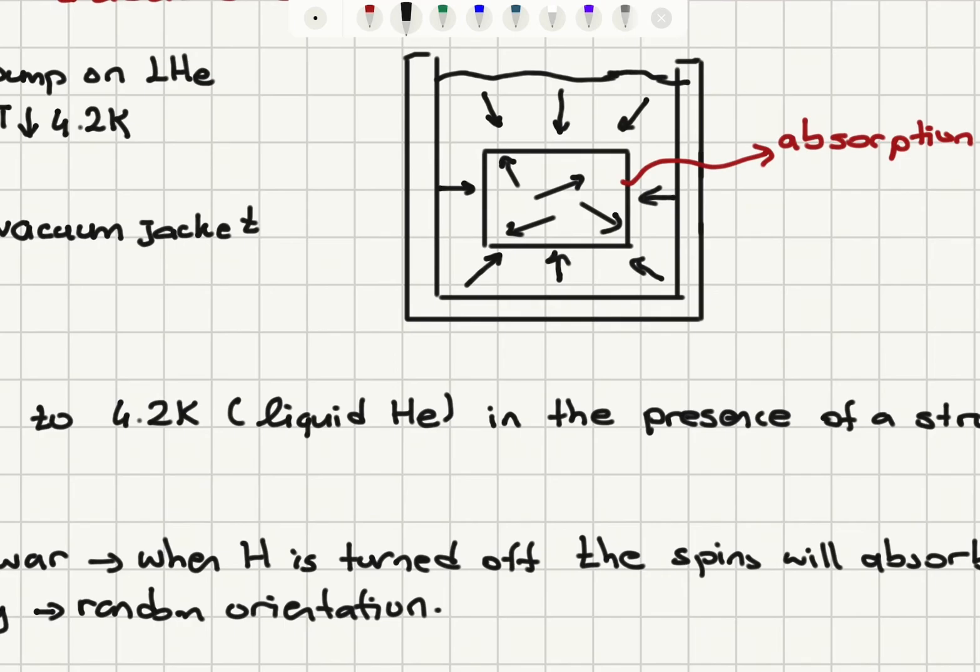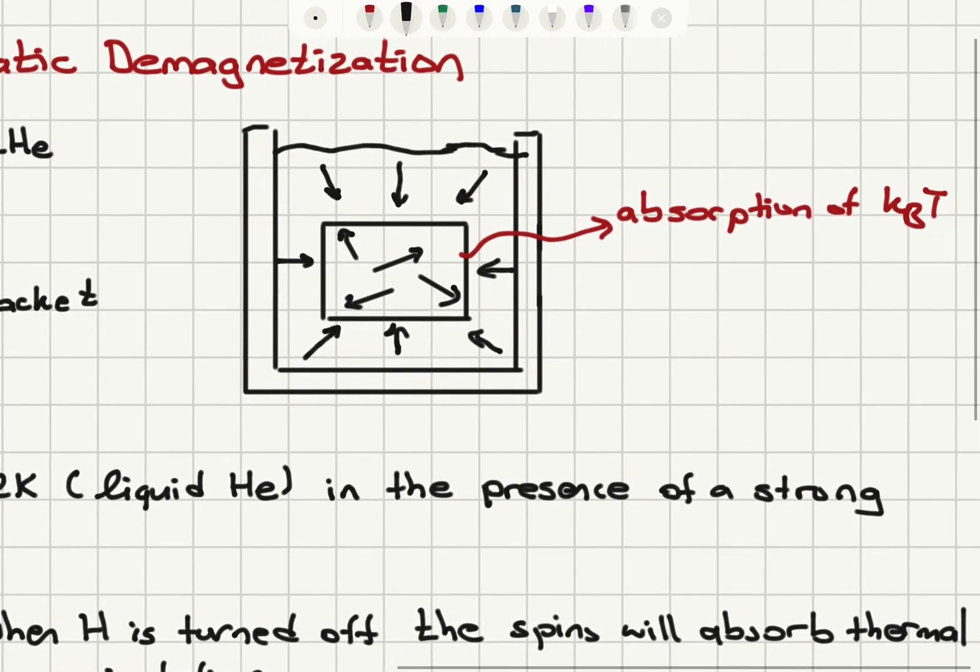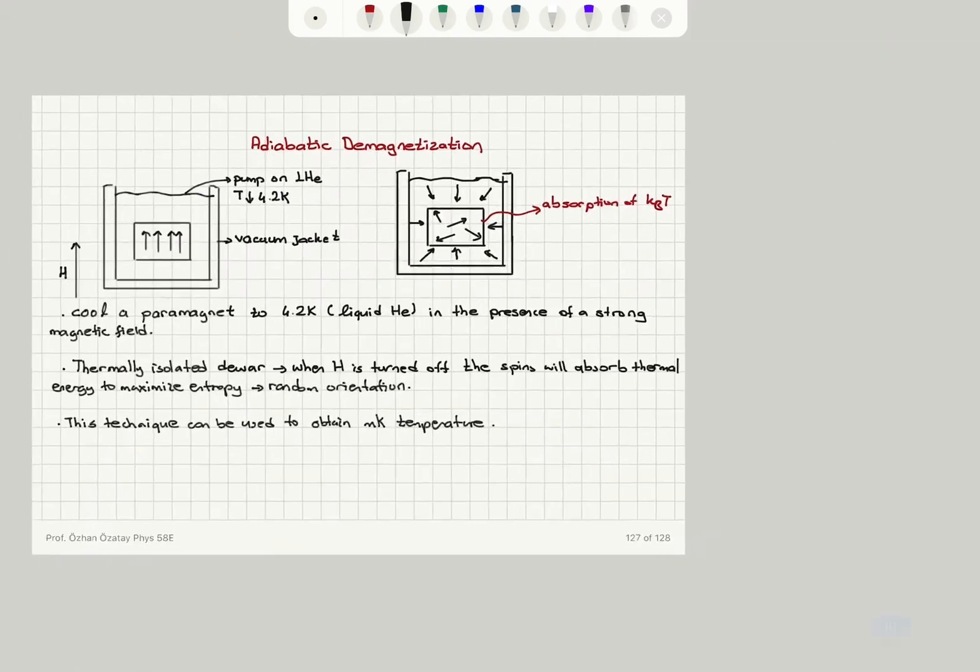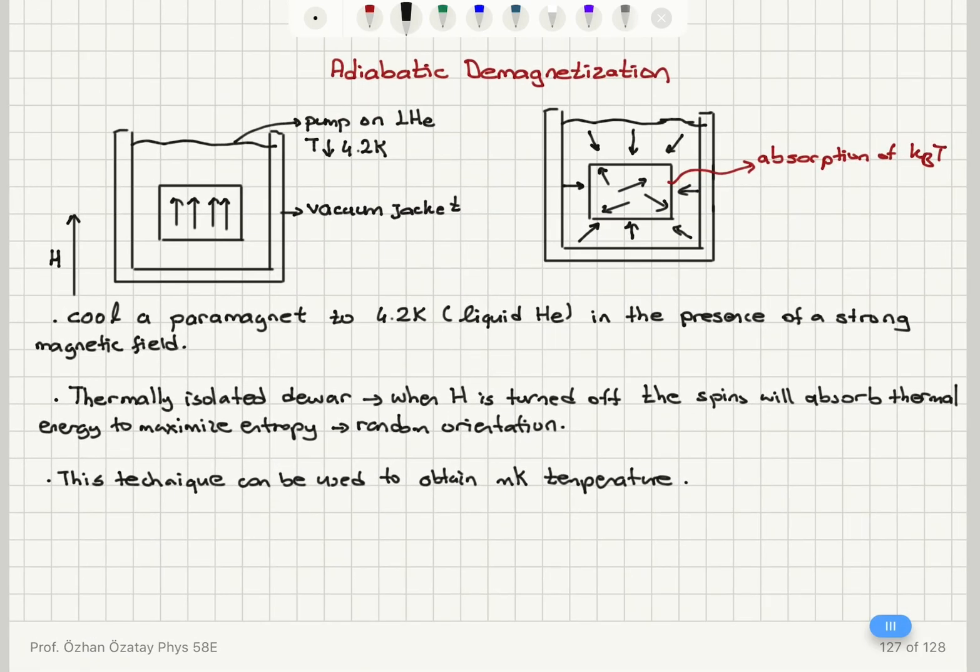It's a quite useful technique for low temperature physics. And here you see the mechanism where the spins are absorbing thermal energy in order to randomize their direction orientation.